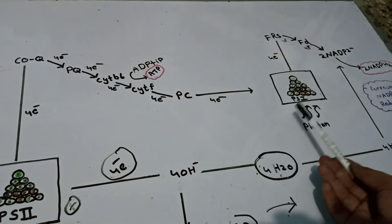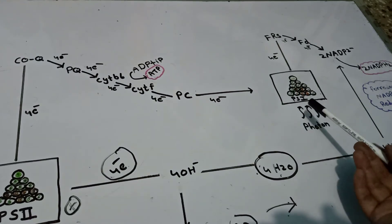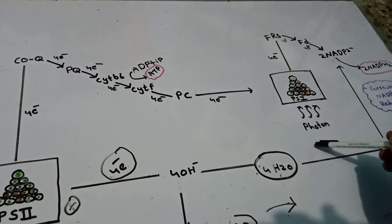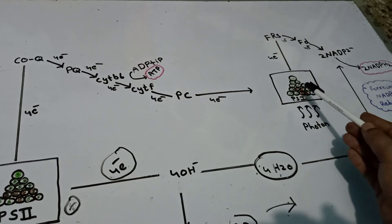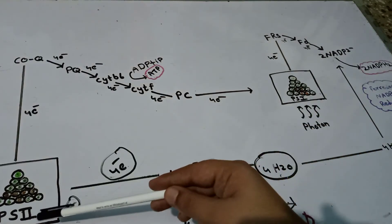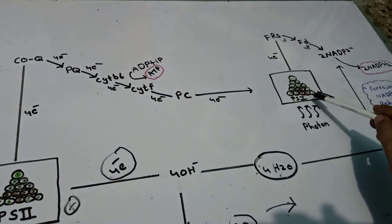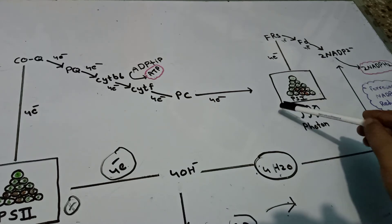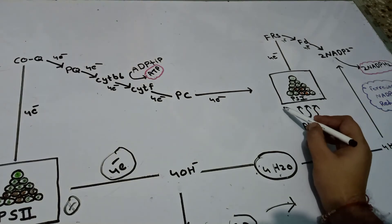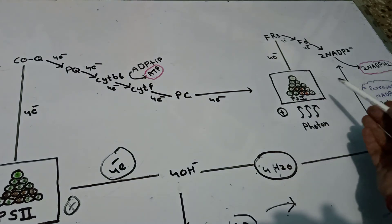Photosystem 1 is also a type of photosystem — it also has a core complex and an antenna complex. It is also receiving photon energy from the sun. After receiving photon energy, there is excitation in this photosystem and there is also ejection of an electron, similar to what was seen in Photosystem 2. After ejecting the electron, Photosystem 1 becomes positively charged — a cation.